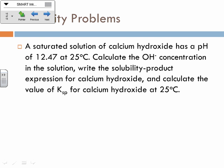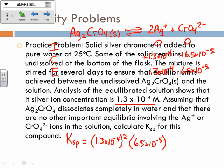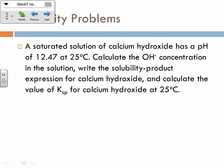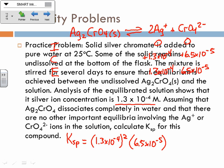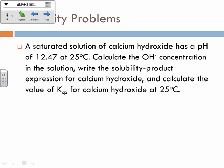The last problem involves pH. It's similar to the Ag₂CrO₄ problem, where they give you an equilibrium concentration in a sneaky way — when they give you the pH, they're indirectly giving you [H⁺], which you use to find [OH⁻], and then it becomes a straightforward Ksp calculation. That's basically solubility equilibrium — it's not all that complicated. There are a couple of things added at the end, but you might find this easier than the acid-base material.